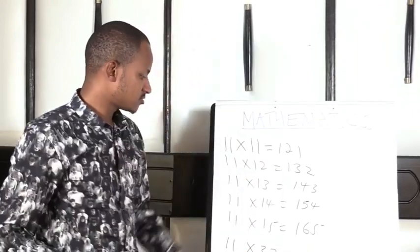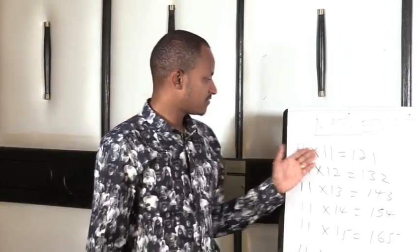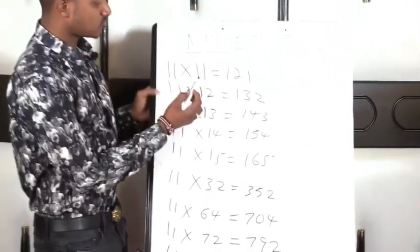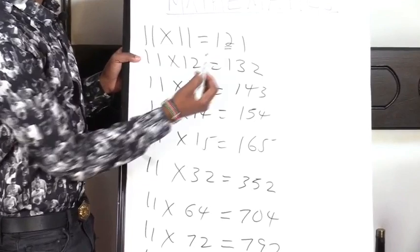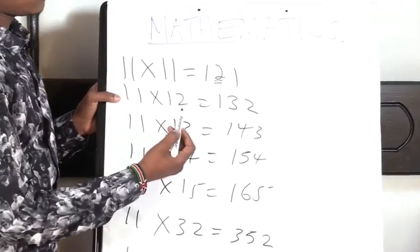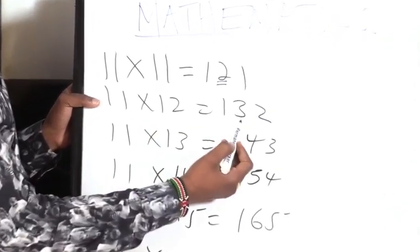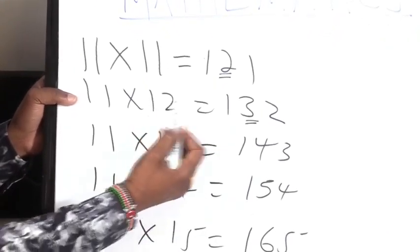So in explanation of this 11 multiplication, when you go to 11 times 11, you just simply add 1 plus 1, you get 2. Then you write 2 in between, then you maintain 1 and 1. If you come to 11 times 12, you just add 2 plus 1, you get 3. Then you retain 1 and 2.